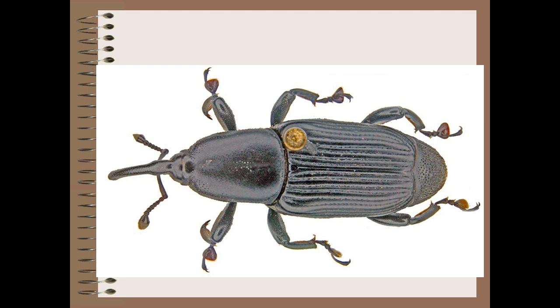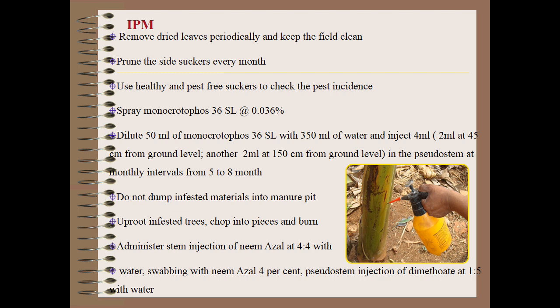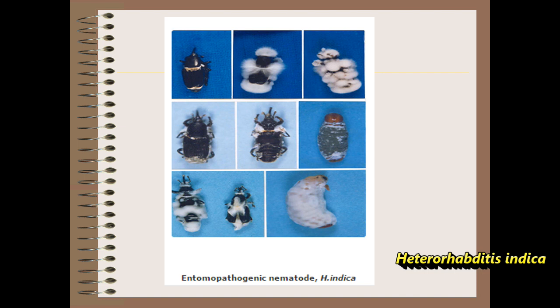The adult is a reddish-brown and black weevil. For management, you can go for pruning and remove dried leaves periodically, and keep the field clean. Use healthy or pest-free suckers to check pest incidence. You can go for monocrotophos. Burn infested trees chopped into pieces. Also go for stem injection with neem-azole at 4% with water, or swabbing with neem-azole 4% as a pseudostem application. Also use the fungus Beauveria bassiana and entomopathogenic nematodes like Steinernema or Heterorhabditis.